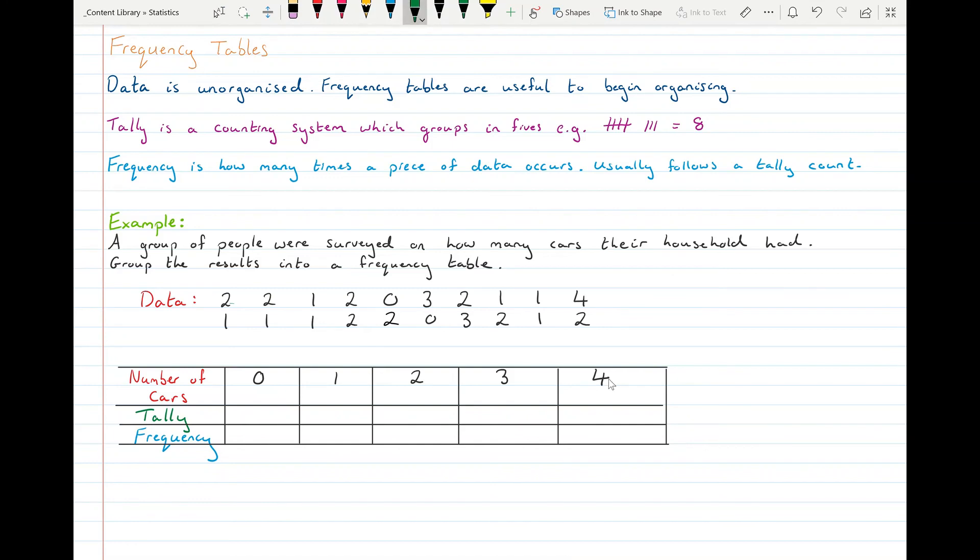To fill in the tally row, how many people had zero cars? One, two. There's two zeros. So my tally is two. How many people had one car? One, two, three, four, five, six, seven. Seven people had one car. So my tally is going to be one bundle of five and an extra two.